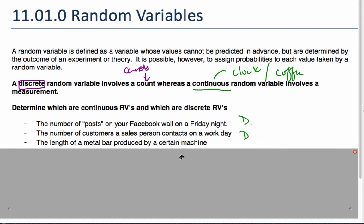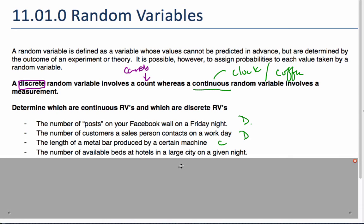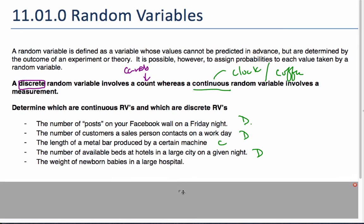Next one, read that one. And that's going to be a continuous, because it's a measurement. Now, this one, number of beds available at a large hotel on a given night. That one's going to be discrete, though it would be quite a lot of beds, but each one could be assigned a probability. And finally, the weight of newborn babies in a hospital, well, that has a continuous scale to it.